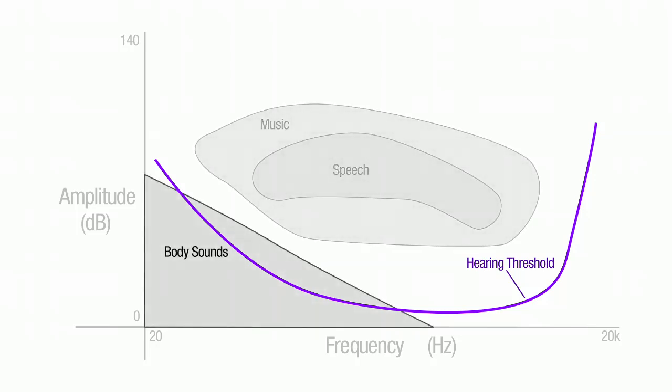Body sounds are often difficult to hear because they're very quiet and they occur at very low frequencies. Most cardiovascular sounds actually occur below our threshold of hearing with only a fraction audible to the human ear.